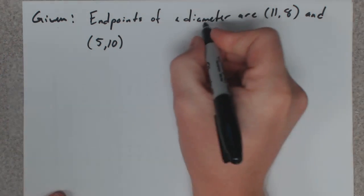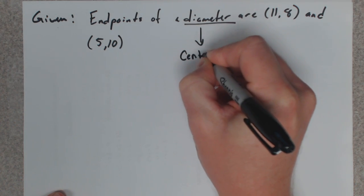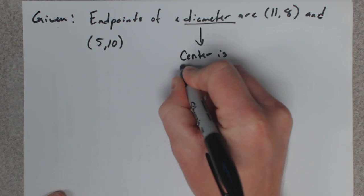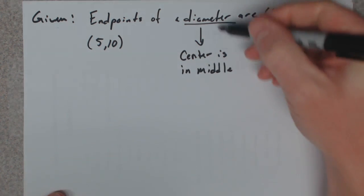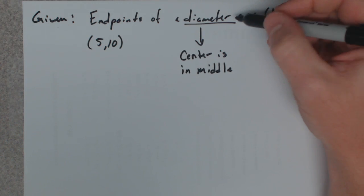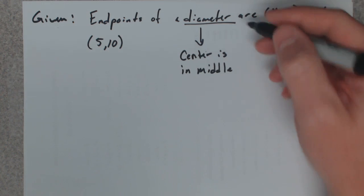But here's the thing about the diameter. The center point is in the middle. The center of the circle is in the middle. Isn't that where the diameter lives? It goes right through the middle of the circle. And the center of the circle is in the middle of the diameter.